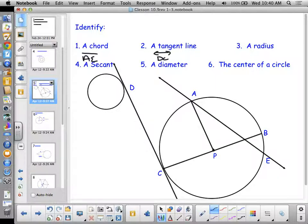P, B. What? P, B? Line, line, D, C. No. Segment A, E. Yeah. Okay. How about a secant? Line A, E. Line, A, E. How about a diameter? Line A, E. Segment A, E. Line A, E.